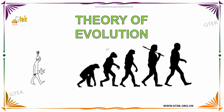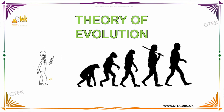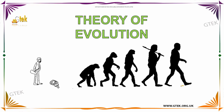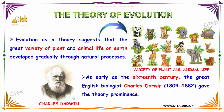Welcome to G-Tech. Let us talk about the theory of evolution. You can see here how evolution is taking place from one stage to the next. The theory of evolution suggests that the great variety of plant and animal life on Earth has developed gradually through natural processes.